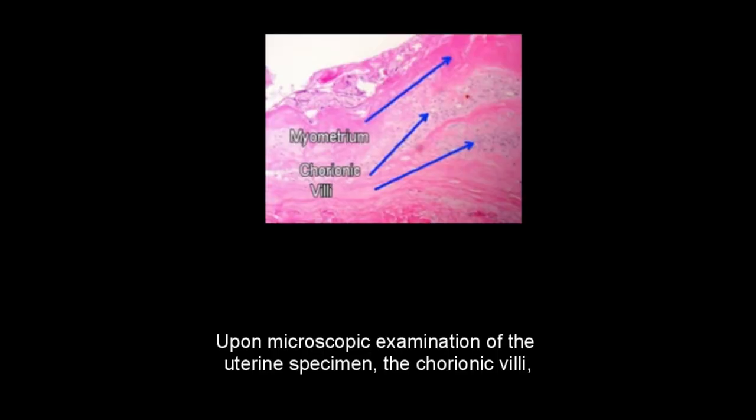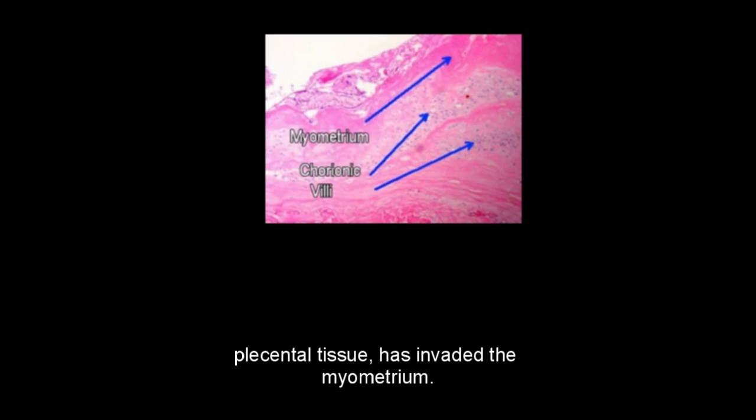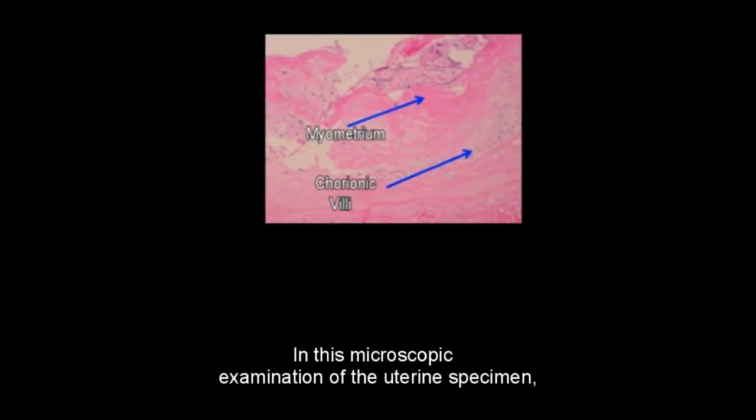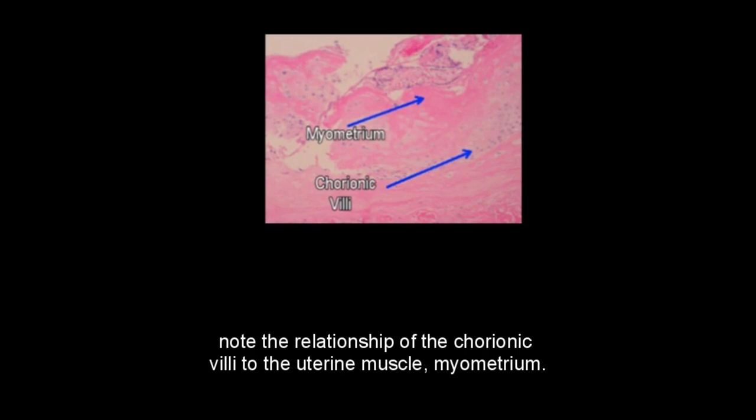Upon microscopic examination of the uterine specimen, the chorionic villi — placental tissue — has invaded the myometrium. Note the relationship of the chorionic villi to the uterine muscle, or myometrium, in this microscopic examination of the uterine specimen.